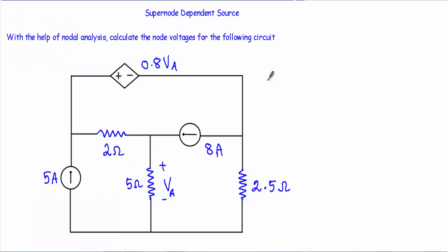In this video I will show you an example of super node analysis in a circuit which will contain a dependent source. With the help of nodal analysis, calculate the node voltages for the following circuit. This circuit contains two independent sources — 5 ampere and 8 ampere — and a dependent source.